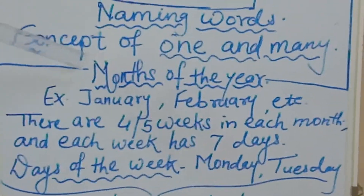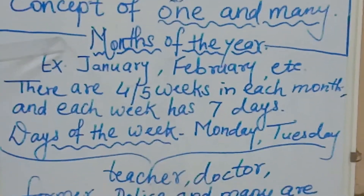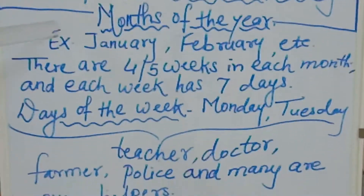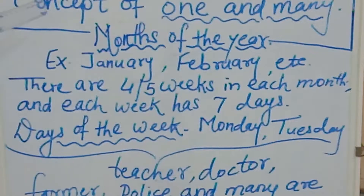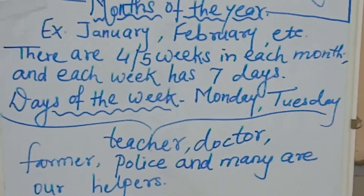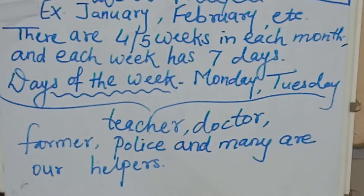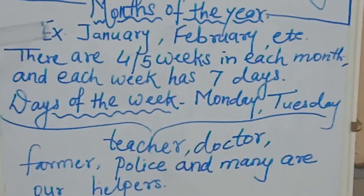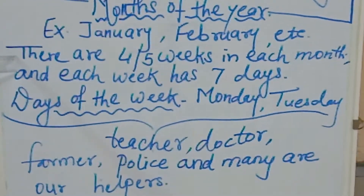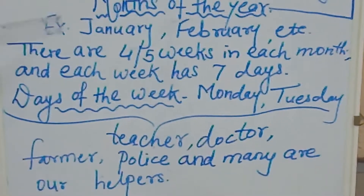This concept of one and many you learnt in full throughout last year. Now, in all the years there are months of the year. There are 12 months of the year. They are January, February, March, April, May, June, July, August, September, October, November, and December. These months each have 4 or 5 weeks.